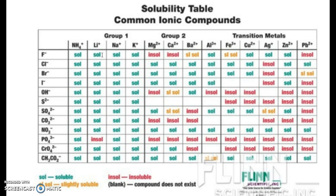The first one on the list with fluorine that will make a precipitate — because it cannot dissolve, so it makes the chunky solid through a chemical reaction — would be fluorine with magnesium. What about calcium and fluorine? Will it make a precipitate? Yes. What about barium and fluorine? Yeah, kind of — technically yes, but just not a lot. What about aluminum with fluorine? Will it make a precipitate? No, it is soluble.